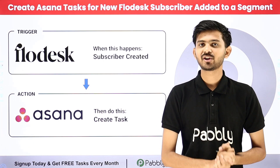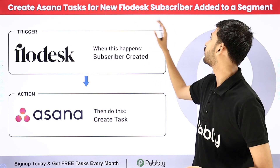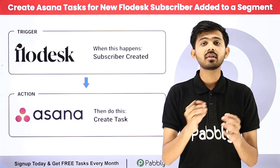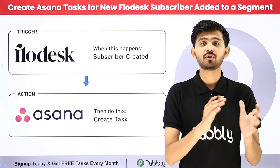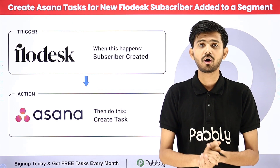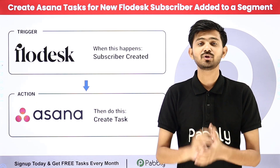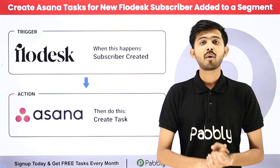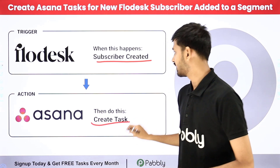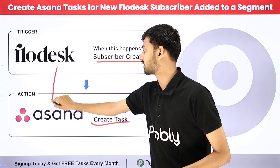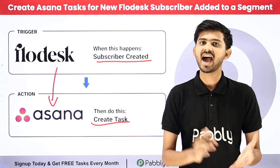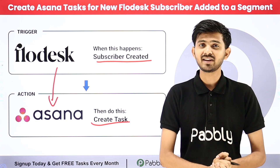Hello everyone, welcome back to Pabbly. Today our topic is how to create Asana tasks for new Flowdesk subscribers added to a segment. I'm running a series of webinars and all the subscribers I'm adding in Flowdesk from my Flowdesk form are registrants for my webinar. I want to send all the relevant information and follow-up emails to all my subscribers, and to manage this I want to create a new task in Asana. To build this connection between Flowdesk and Asana, I'm going to use Pabbly Connect.